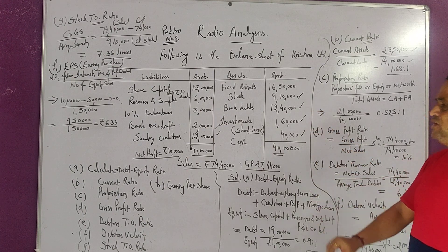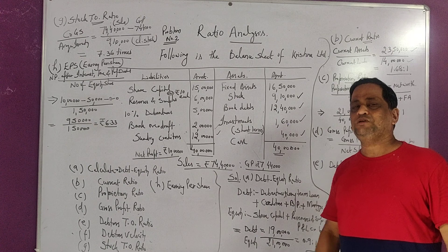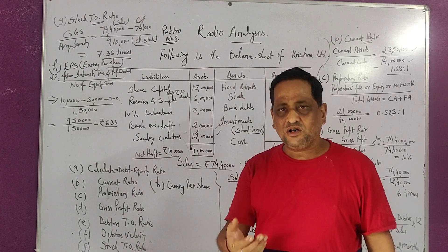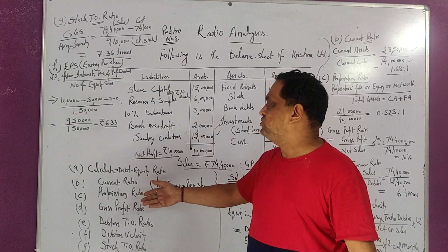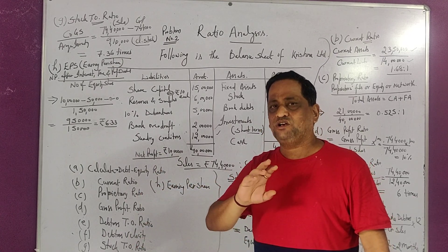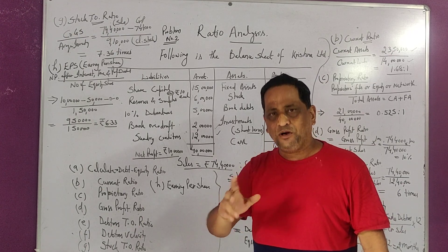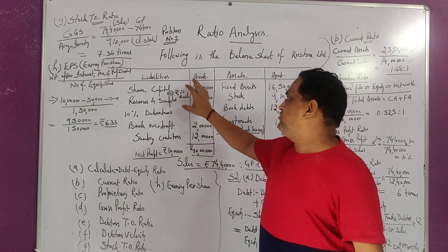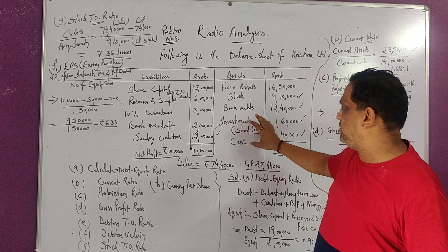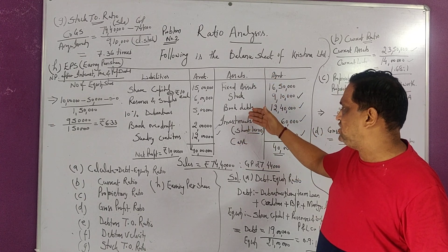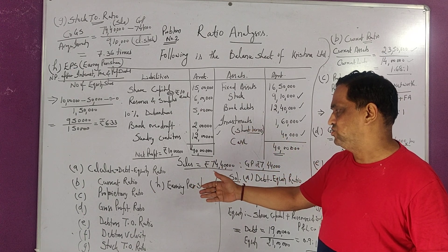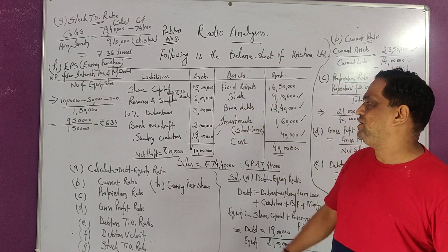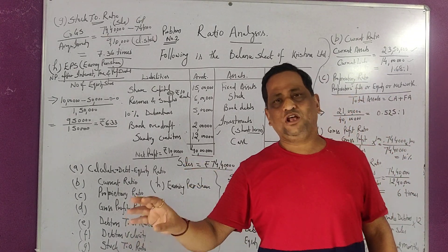So this ratio analysis gives the company's performance — liquidity ratios for short-term, and debt-equity ratio and proprietary ratio for long-term solvency. Activity ratios include stock turnover ratio, debtor turnover ratio, and debtor velocity. Profitability ratios include gross profit ratio, and EPS is the company's investor signal. We have taken a mixture of ratios in this illustration — taken the balance sheet, calculated the ratios, and made comments on each. Thank you very much.